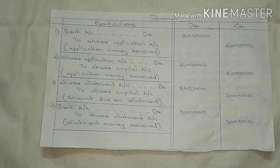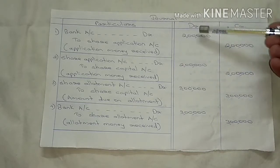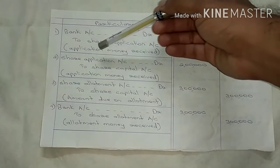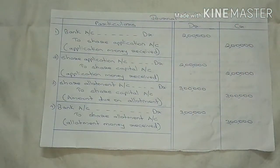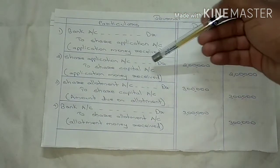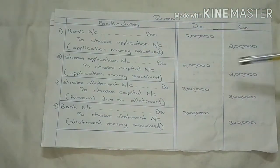Application money is ₹2 lakhs. For 1,00,000 shares, the application money received is 1,00,000 into ₹2 = ₹2,00,000. Then Share Application Account debited to Share Capital Account — application money transferred: ₹2,00,000. That completes the share application entry.